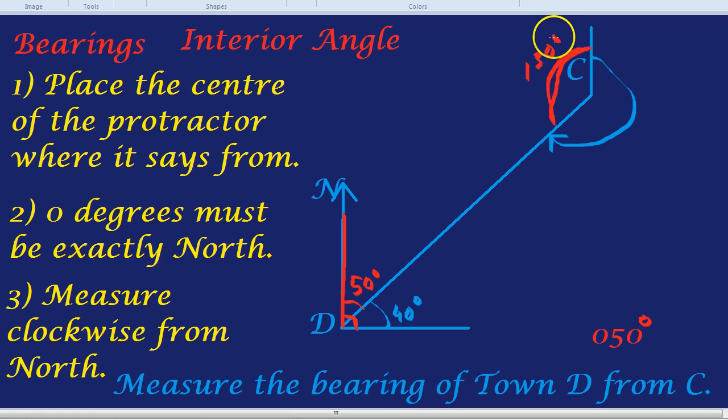Is that our bearing? Not quite because bearing, remember, is not the anti-clockwise direction it has to be the clockwise direction. How would we work out the angle going this other side? Well, angles around a point are 360 degrees. So, we do 360 take away 130 which would be 230 degrees.